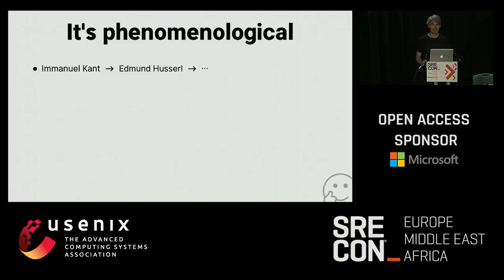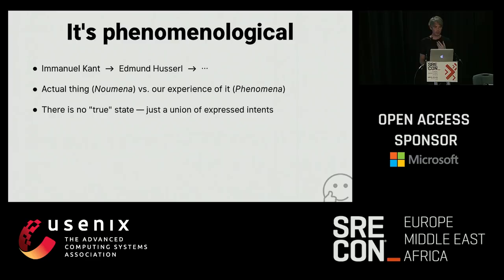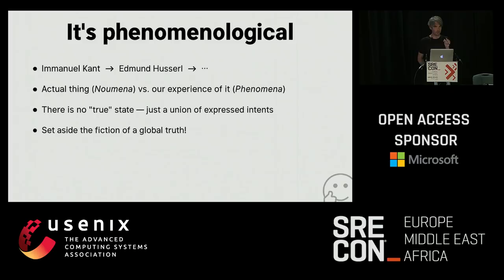Phenomenology is this thing that started with Kant, and I think one of its strongest thinkers was Edmund Husserl. Roughly, phenomenology states that there's a difference between the actual thing — the reality, which it calls the noumena — and our experience of it, the phenomena of it. So there is no true state in distributed systems thinking; there's only a union, a merging of expressed intents, of the view of the world from all these nodes.